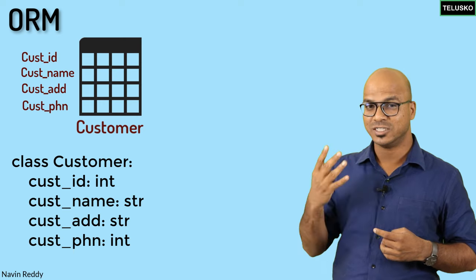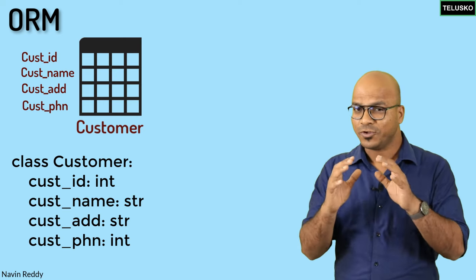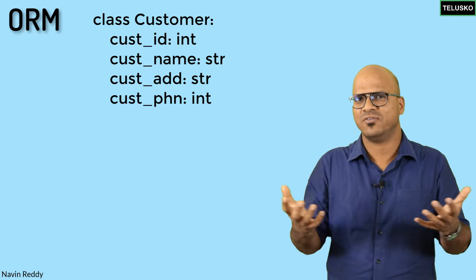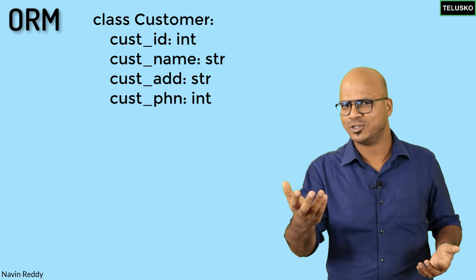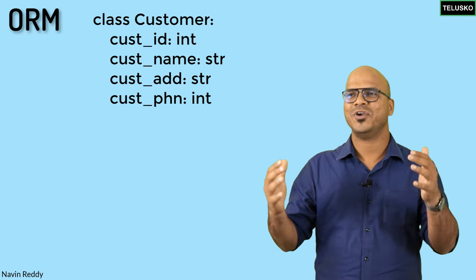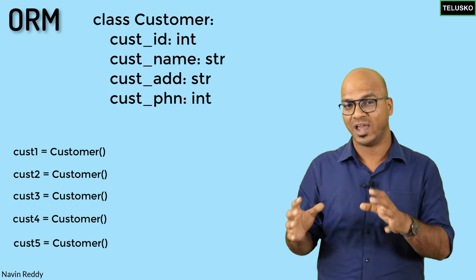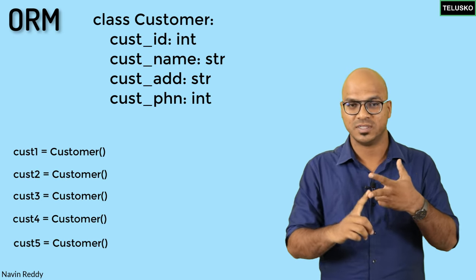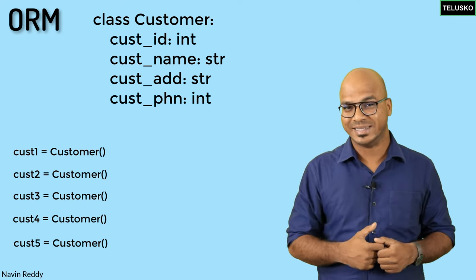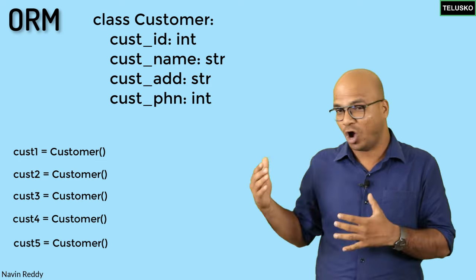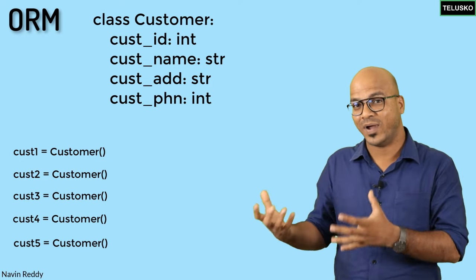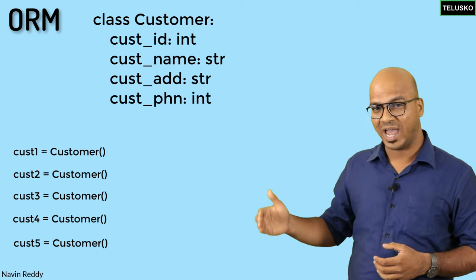Now if you try to relate more, we can have multiple objects of this class. So a customer can have maybe five or ten objects, depending on how many customers visit your shop. If you have five customers, every customer will have a different name, different address, and different phone number — those things are stored in different objects. Every object will have its own data, or we can say every object has a different state. State is basically the current values, so every object will have a different value.